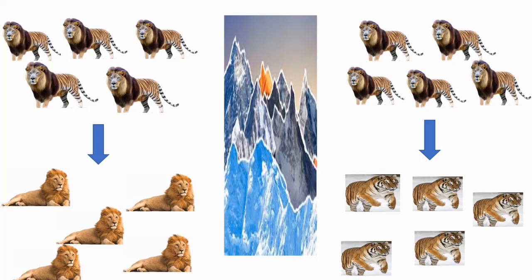What that means is that the group of ligers on the left interbred with each other and the group of ligers on the right interbred with each other but the two groups did not interbreed.